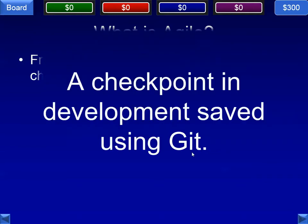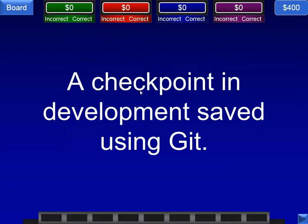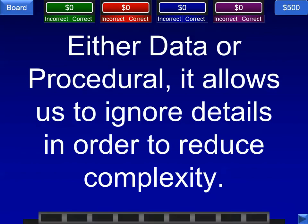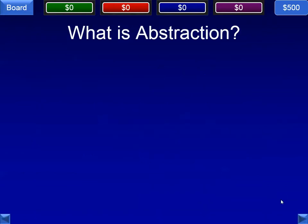Next question: a checkpoint in development usually saved using Git — we're talking about a commit. Either data or procedural, it allows us to ignore details in order to reduce complexity — we're talking about abstraction. We don't necessarily have to know how all things work; we just have to know that it works in some cases.